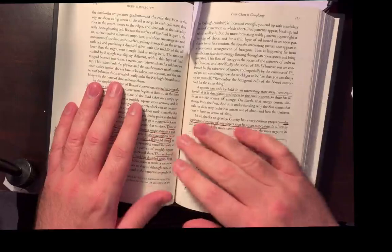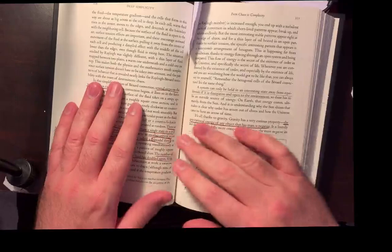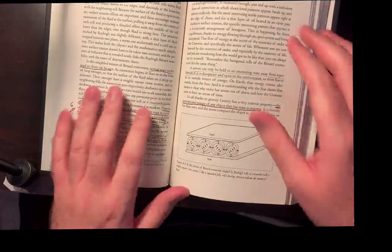Another example that Veritasium uses about chaos is convection cells. Again, I mean, he uses the exact same examples.